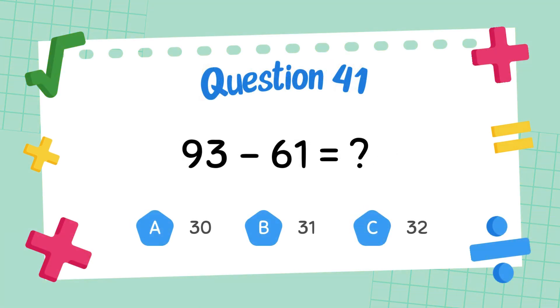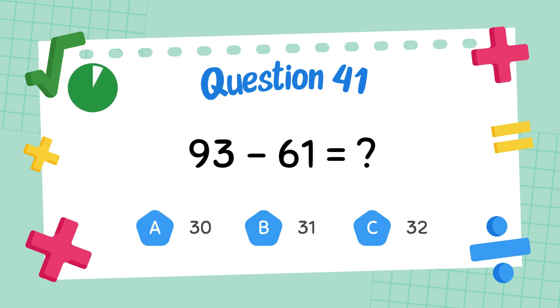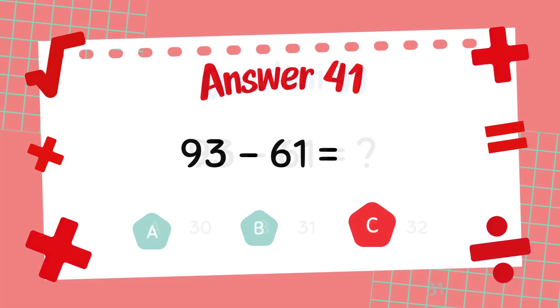What is ninety-three minus sixty-one? The answer is thirty-two.